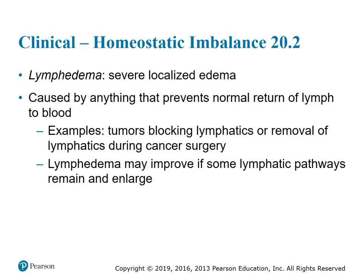Clinical homeostatic imbalance 20.2: Lymphedema is a severe localized edema. It's caused by anything that prevents the normal return of lymph to blood — examples include tumors blocking lymphatics or removal of lymphatics during cancer surgery. Lymphedema may improve if some lymphatic pathways remain and enlarge.